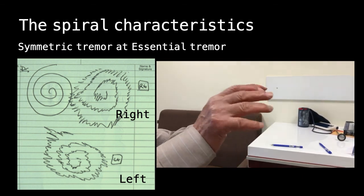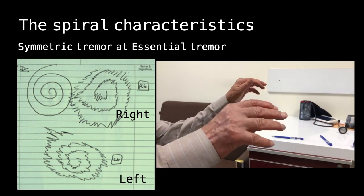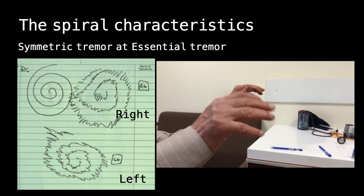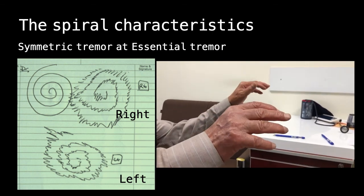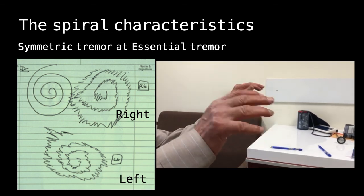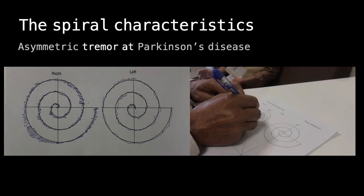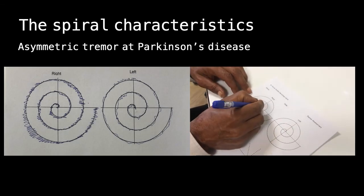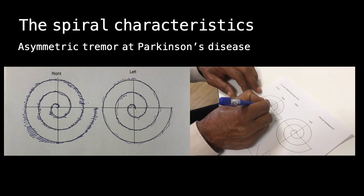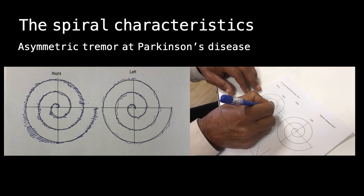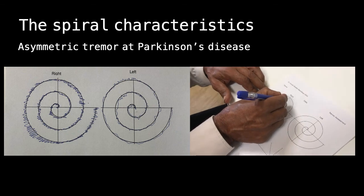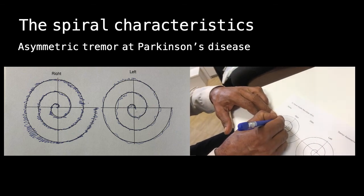Like other characteristics of tremor, a spiral can show you whether tremor is in one hand or two hands, and whether it's symmetric or asymmetric, as shown in this picture. This is a spiral from Parkinson's disease—you can see that the right hand shows tremor on the spiral and the left hand has less tremor than the right one.